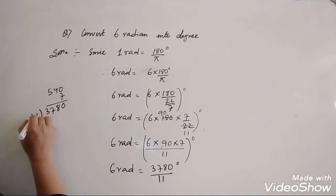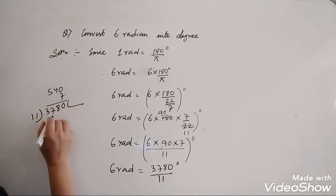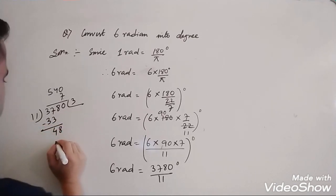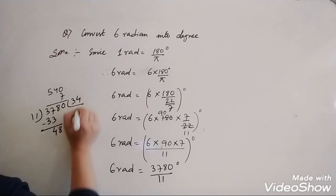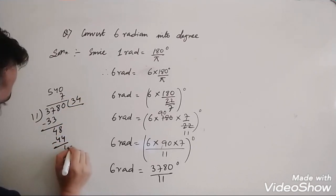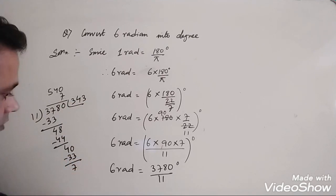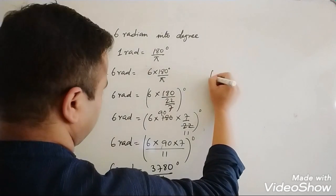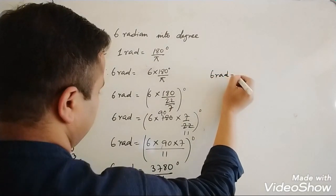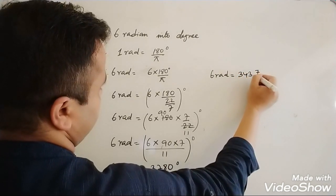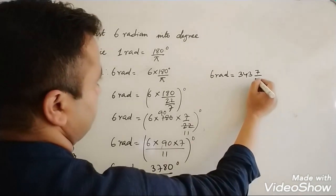Now divide 3780 by 11. 11 goes into 37 three times giving 33, after subtracting 4 is left. Bring down 8 to get 48; 11 into 48 goes 4 times giving 44, after subtracting 4 is left. Bring down 0 to get 40; 7 is left. So this equals 343 with remainder 7. Write it as the mixed fraction 343 and 7/11 degrees.